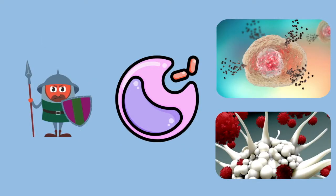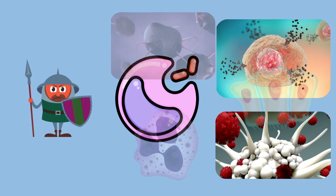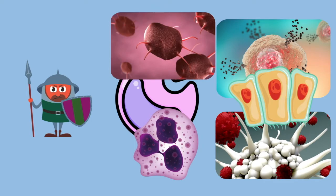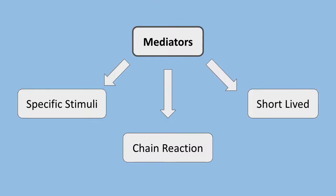The major cell types that produce mediators of acute inflammation are the sentinels that detect invaders and damage in tissues — cells like macrophages, dendritic cells, and mast cells — but platelets, neutrophils, endothelial cells, and most epithelia can also release some of these mediators. Active mediators are produced only in response to specific stimuli, including microbial products and substances released from necrotic cells, ensuring inflammation is triggered only when and where it is needed.